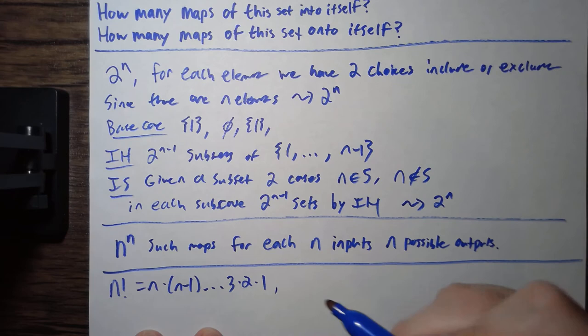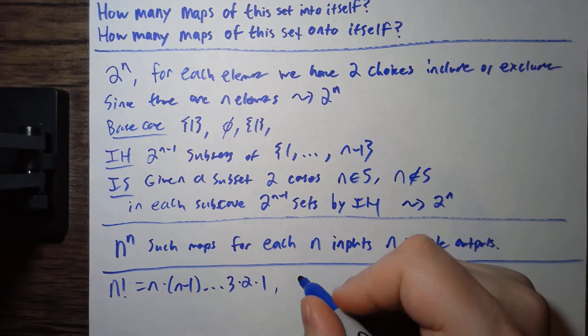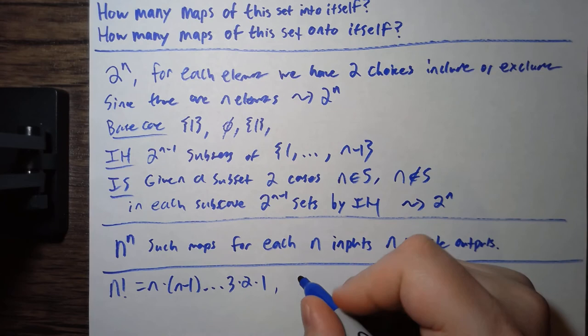maps into itself, well, the idea is, since you're going to be a bijection, if you look at 1, 1 has n options for where it can go. And then, if you look at 2, well, 2 is going to have n minus 1 options. Because it can't go where 1 goes, because then it won't be injective. And then, basically, n will have 1 option. And so, that gives you n factorial different maps of the set into itself. So, that's how you do this problem. Thanks for watching.